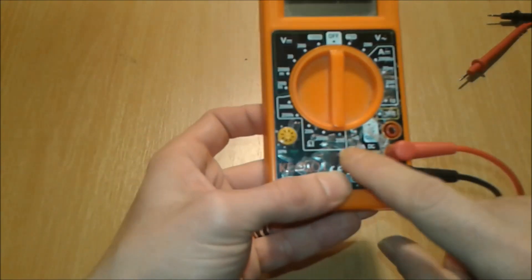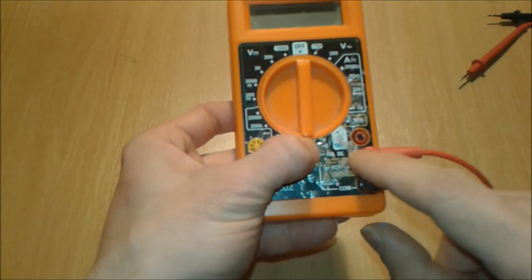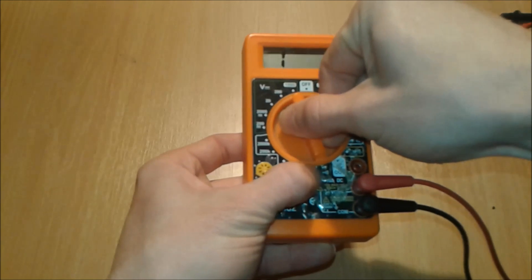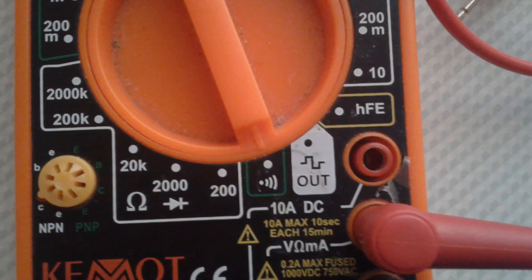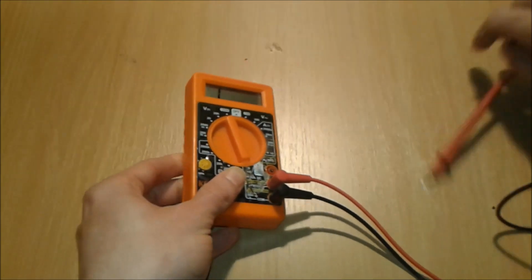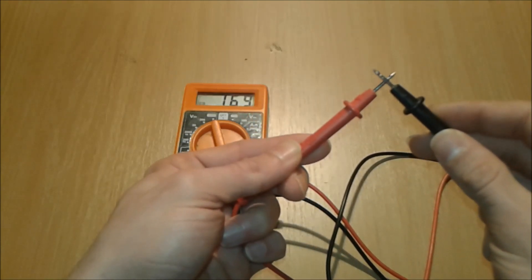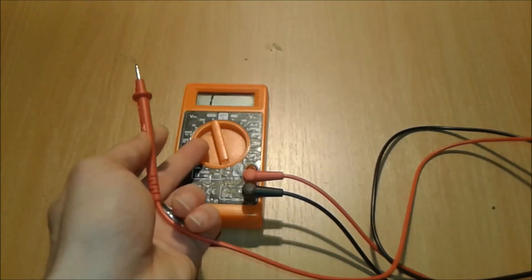On the bottom here we have a small sign. We're gonna turn our multimeter right to this position. And now with the probes we're gonna touch them to each other. You hear it? Some multimeters have this sound, others have LED lights, but it's the same.